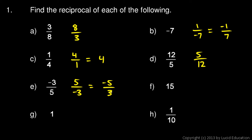Let's put it up there. This would be negative 5/3. So the reciprocal of negative 3/5 would be negative 5/3. The reciprocal of 15 would be 1/15.